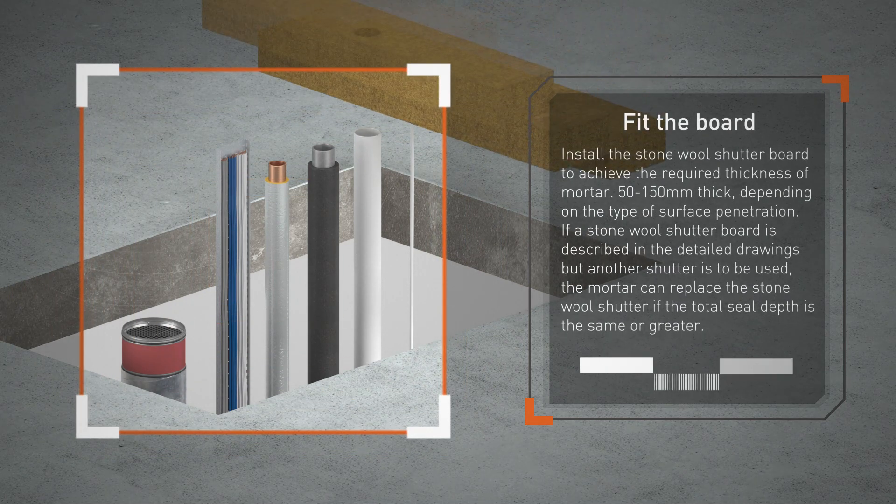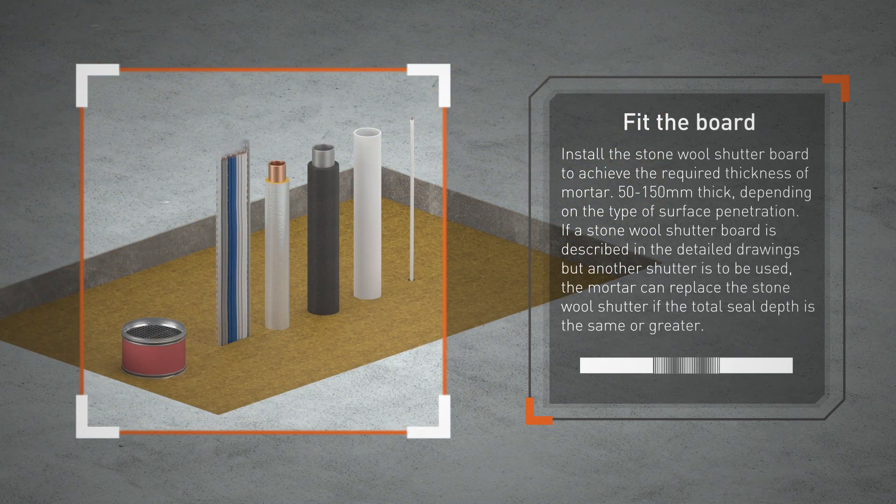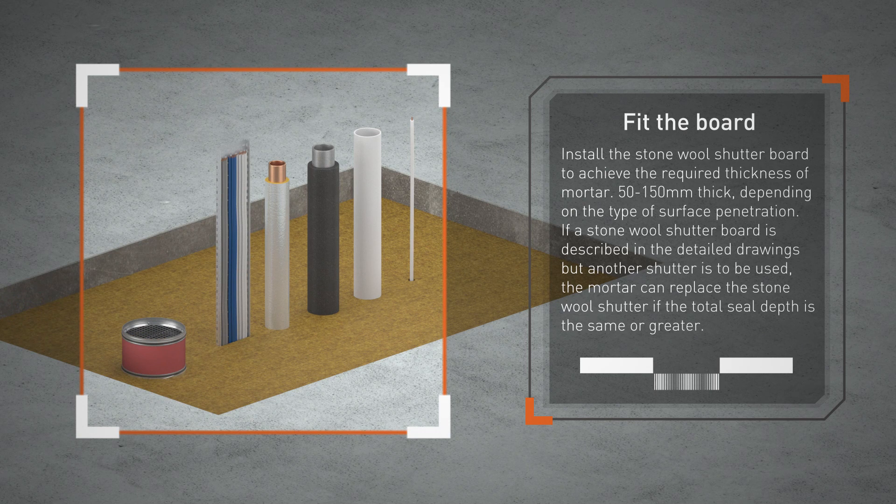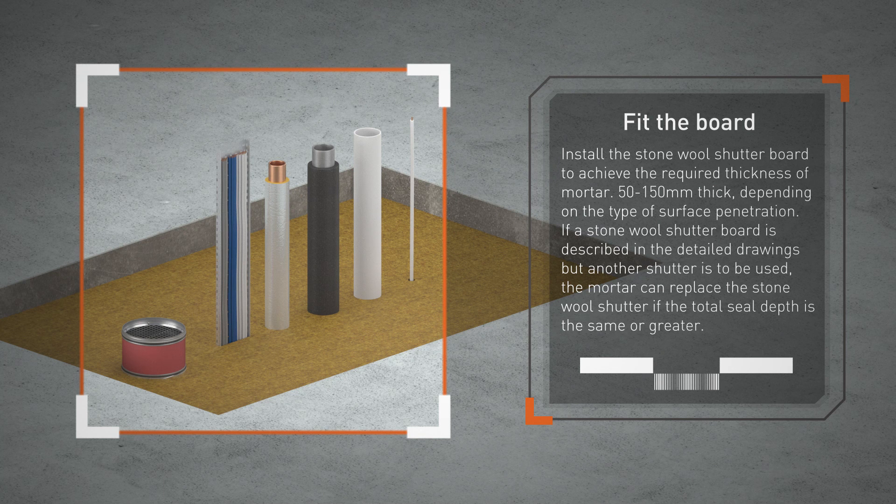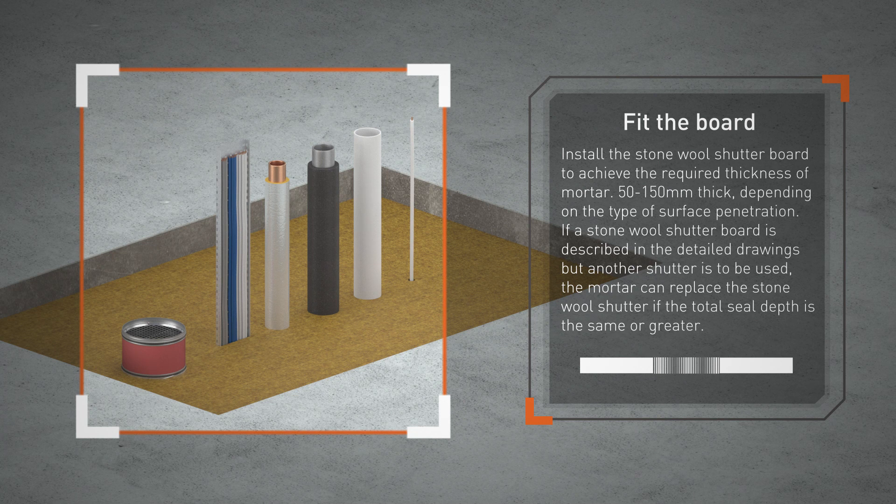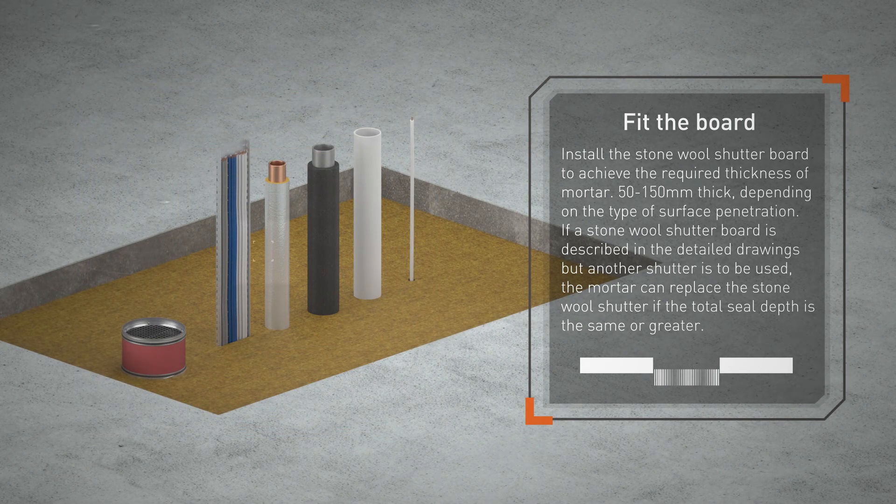Install the stone wool shutter board to achieve the required thickness of mortar 50-150 mm thick, depending on the type of surface penetration. If a stone wool shutter board is described in the detailed drawings but another shutter is to be used, the mortar can replace the stone wool shutter if the total seal depth is the same or greater.